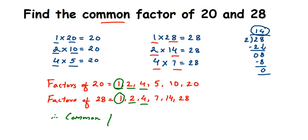So the common factors of 20 and 28 are 1, 2, and 4. For any similar problem, find the factors of each number separately, then take what's common. If you have any other questions or doubts, you can drop a comment. Thank you so much for watching.